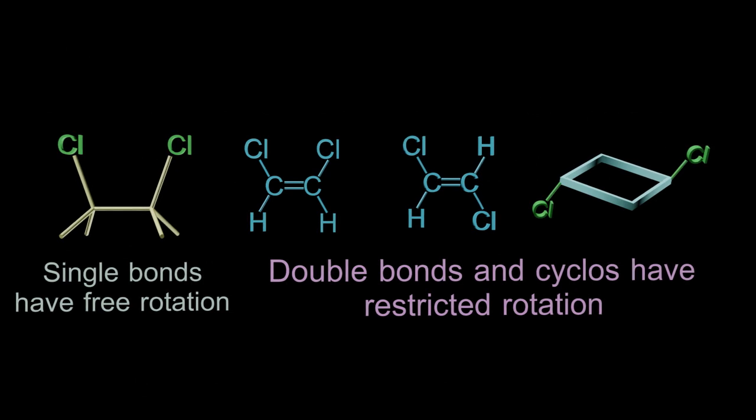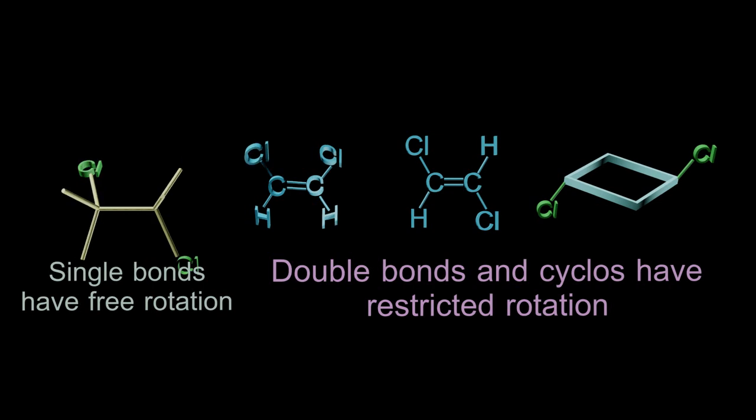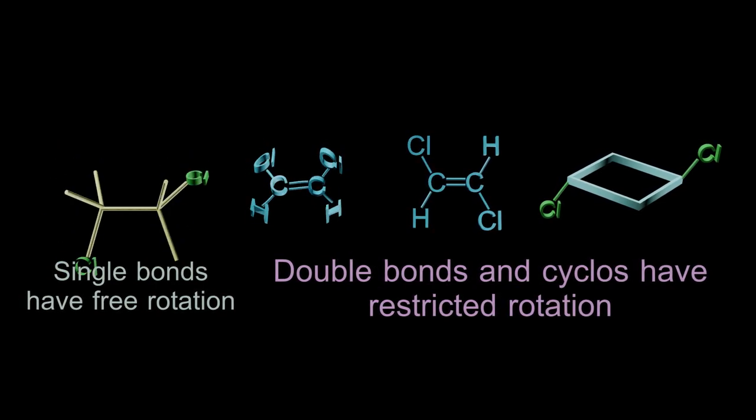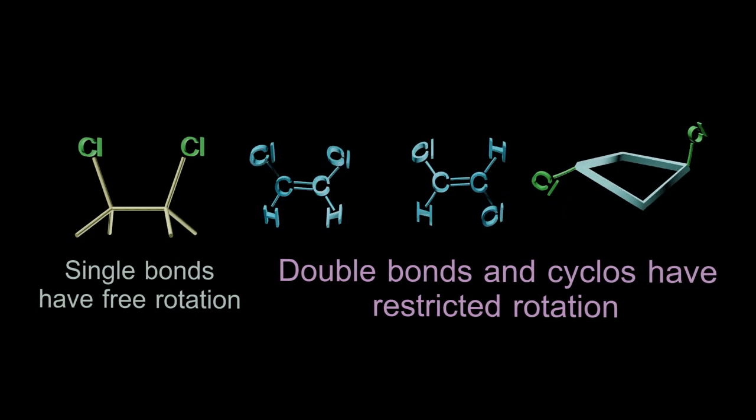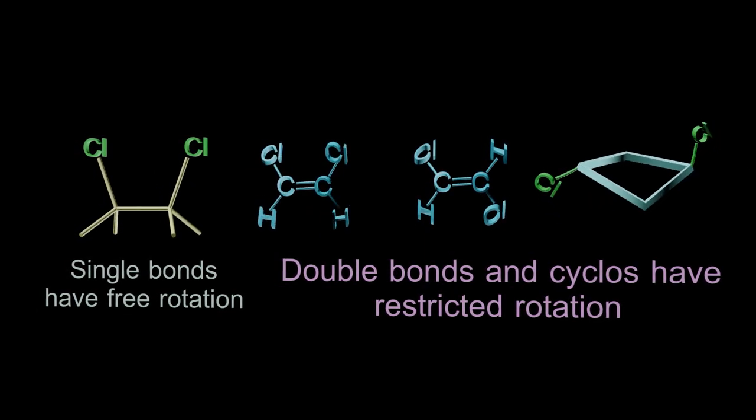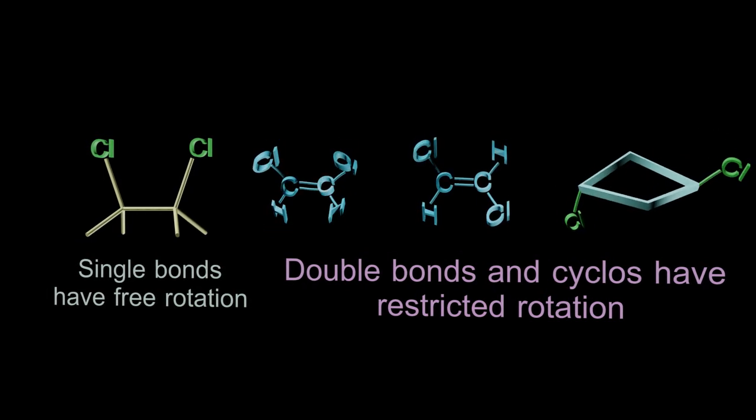Naming and drawing cis-trans isomers. Because single bonds have free rotation, it doesn't really matter which way the groups, in this case the chlorines, are facing because they're going to be in a different position soon with that free rotation. But double bonds and cyclo compounds have restricted rotation, so the position of the groups, in this case chlorines, is important.